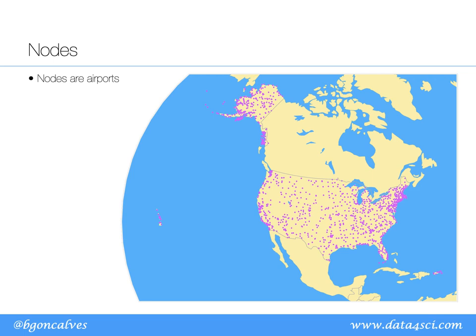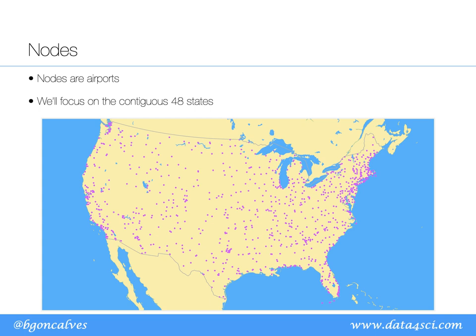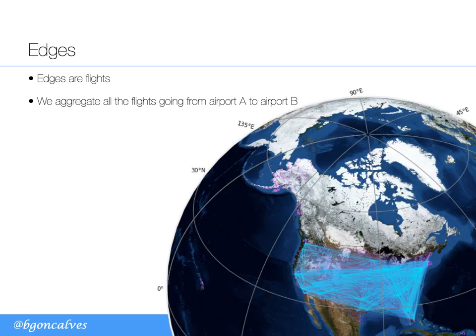The nodes in our graph are airports, and for simplicity we focus on airports and flights within the contiguous 48 states. We represent flights as edges and the weight — the number of passengers — as the width of the line connecting two airports. You can immediately see some patterns: a lot of flights up and down the east coast, a large number of coast-to-coast flights, and several smaller regional flights.